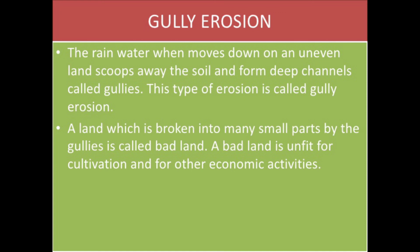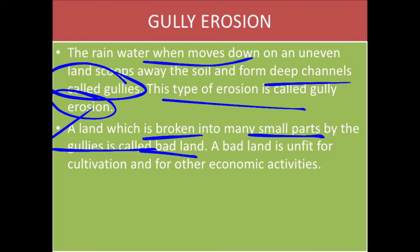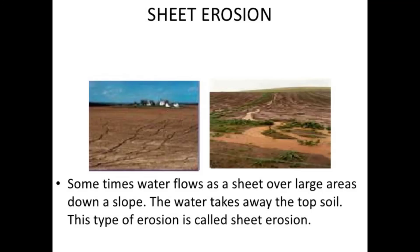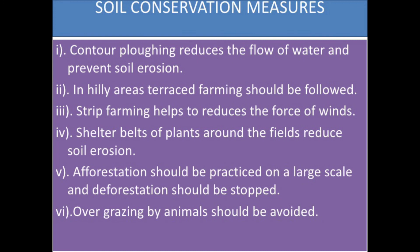When rainwater moves down from uneven land slopes, it takes away soil and forms deep channels called gullies. This type of erosion is called gully erosion. Land broken into many small parts by gullies is called badlands, which are unfit for cultivation and other economic activities. In sheet erosion, water flows as sheets over large areas down a slope, taking away the topsoil.